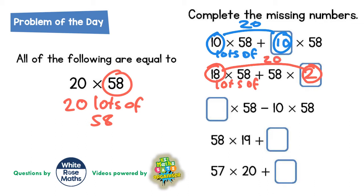On the third one we are subtracting 10 lots of 58, so how many lots of 58 would we have to start with? This is the starting amount so that when we subtract 10 we end up with 20. So in other words, what number do we subtract 10 from to end up with 20?